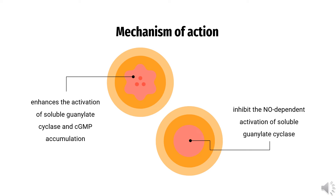Ambroxol is a mucolytic agent. Excessive nitric oxide (NO) is associated with inflammatory and some other disturbances of airways function. NO enhances the activation of soluble guanylate cyclase and cGMP accumulation. Ambroxol has been shown to inhibit the NO-dependent activation of soluble guanylate cyclase, suppressing excessive mucus secretion, thereby lowering phlegm viscosity and improving mucociliary transport of bronchial secretions.